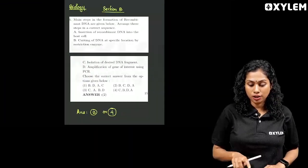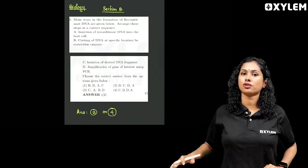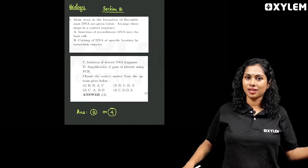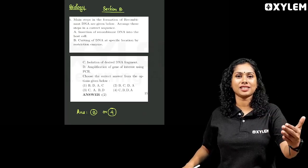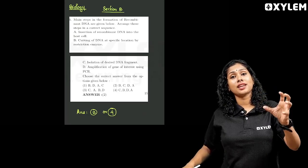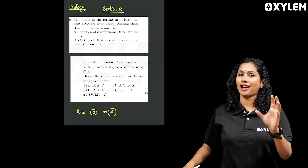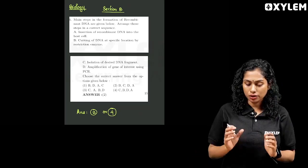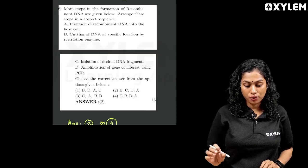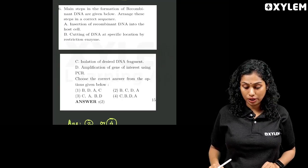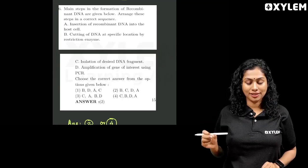And finally if we look at Biology, it's a Section B question. Initially what you should pay attention to is that Section B questions are selective. We'll discuss this question only if you've answered it. The question is: 'The main steps in formation of recombinant DNA are given below. Arrange these steps in the correct sequence.'